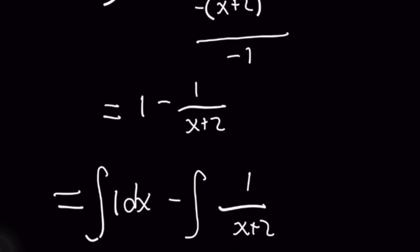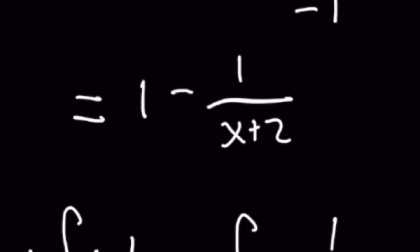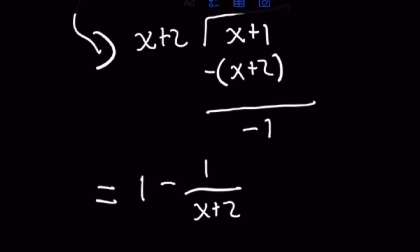So the final result then of our long division is going to be 1 minus 1 over x plus 2 because that negative 1 that we had there when we subtracted everything is still going to be divided by your divisor.